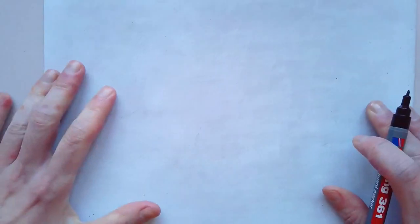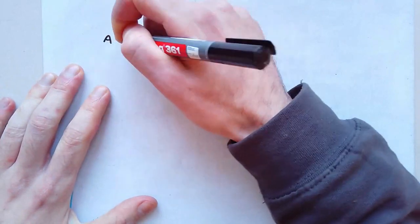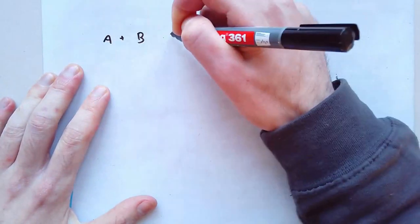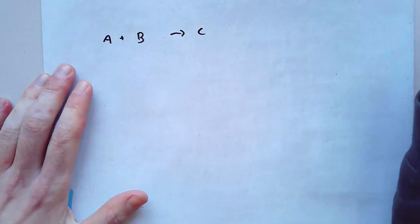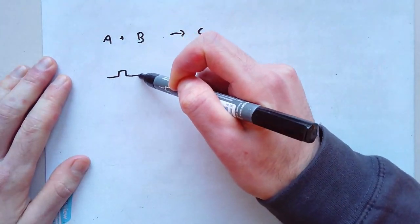So just to recap, let's imagine we've got a reaction over here where I've got A plus B forming C. Now what we did last time is I showed you that if I imagine these things as like a battery.